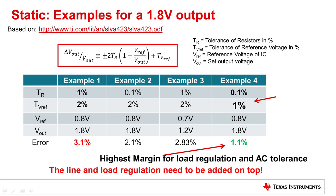A brief calculation shows how these factors play their role in total static accuracy. The formula used results from the app note highlighted in the link. Since line and load regulation depend on input voltage and output current, their contributions must be added on top. In each of four datasets, one parameter has been tweaked to show its effect. The direct impact of reference voltage accuracy, which is additive in the formula, plus the influence of the resistor divider, can significantly improve accuracy, leaving more margin for the remaining dynamic tolerances.